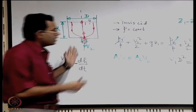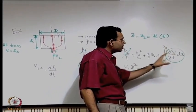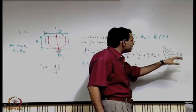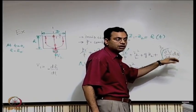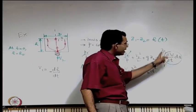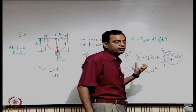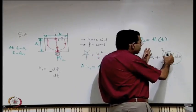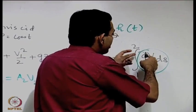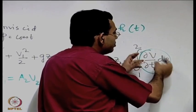We were discussing the significance or impact of the unsteady term that should or should not be retained in Bernoulli's equation. In engineering, we try to get a feel of the order of magnitude. We may approximate it by a term like the derivative of velocity with respect to time times some height.